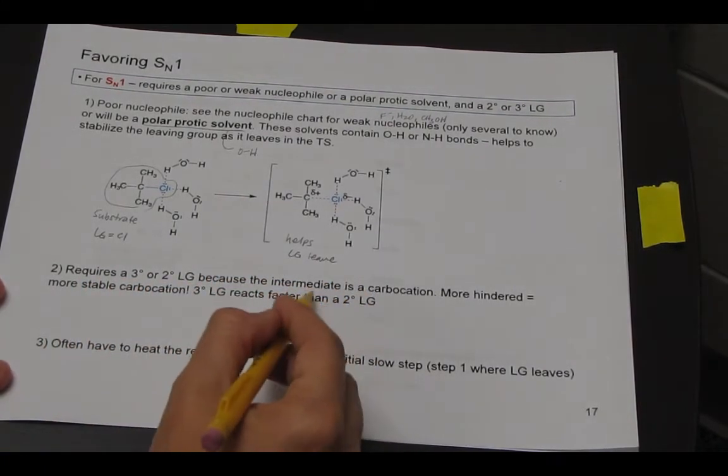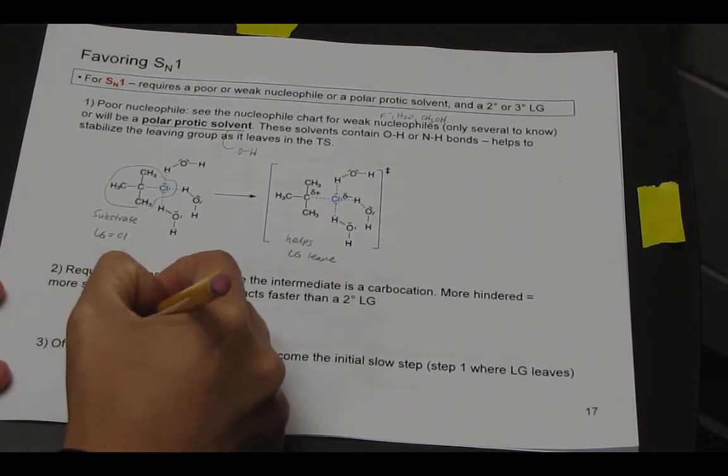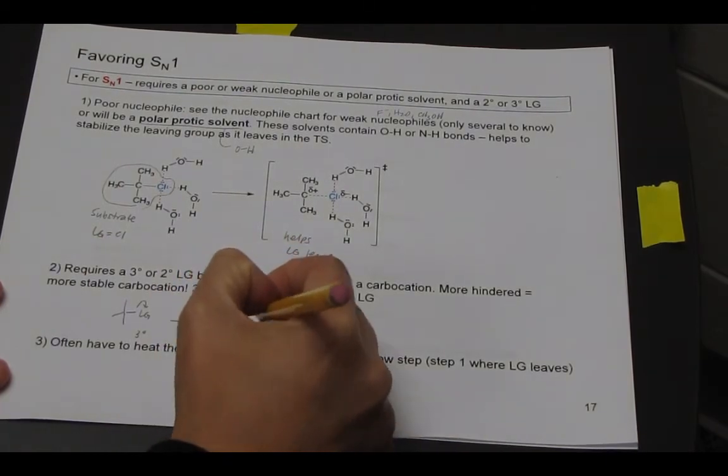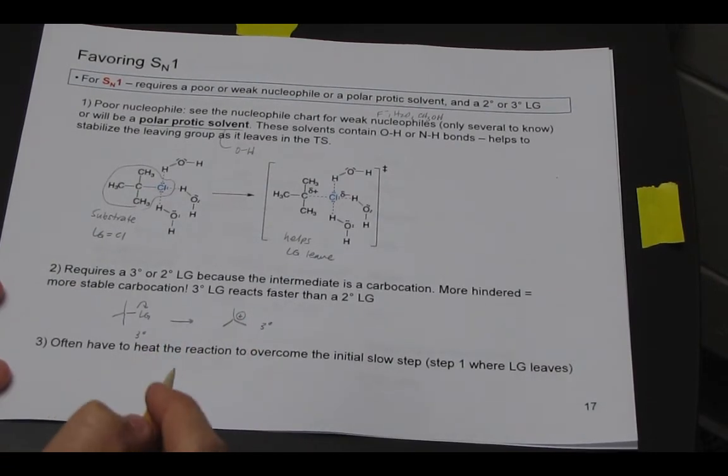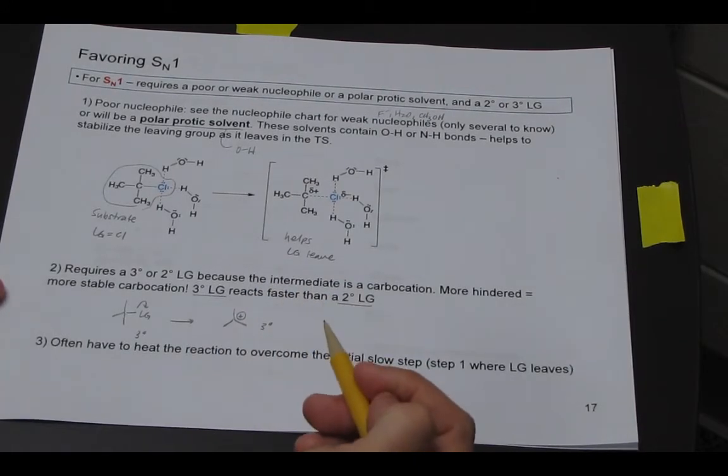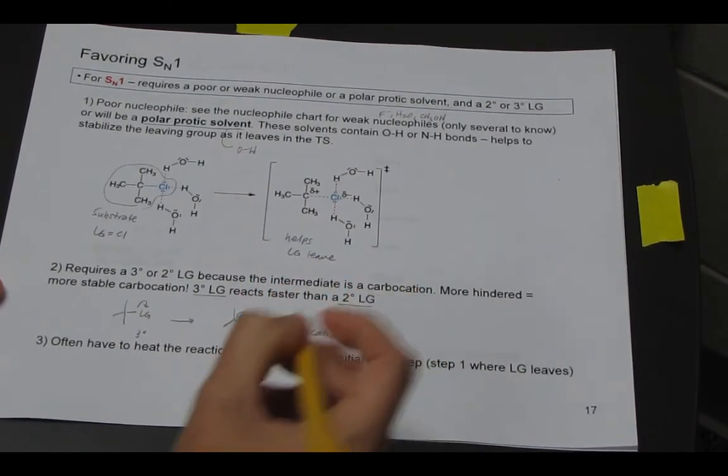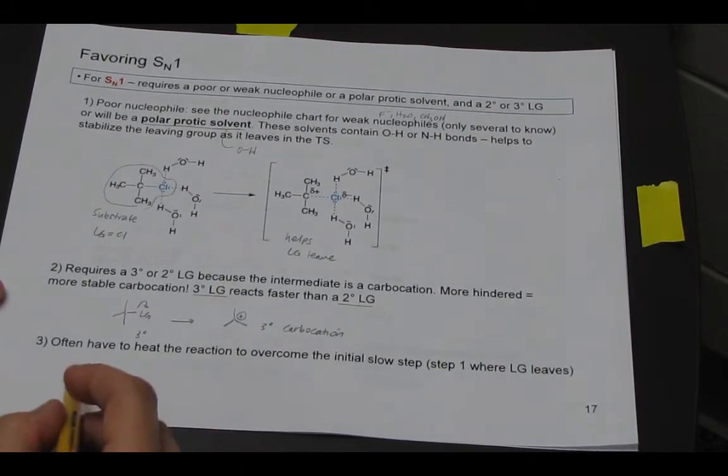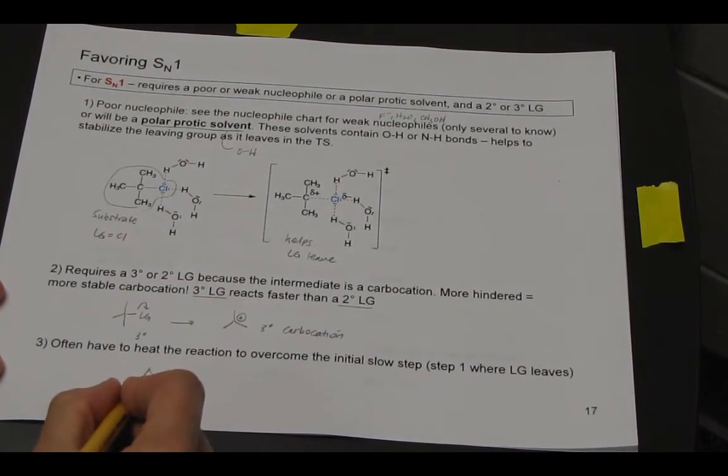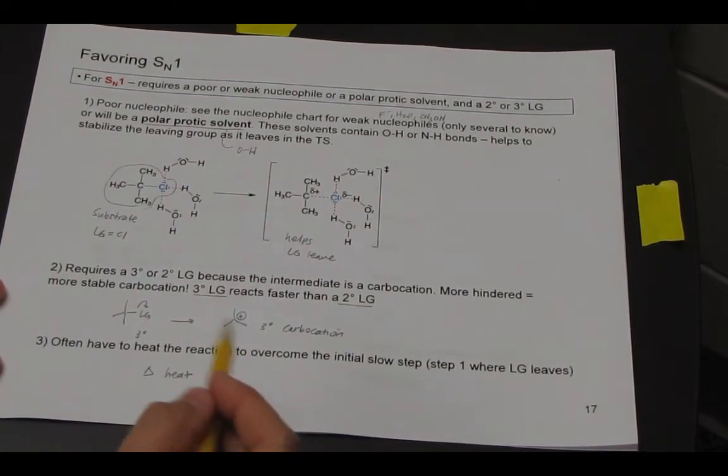We require a tertiary or secondary leaving group. And the reason is, is because our intermediate that forms is a carbocation. So if our leaving group is tertiary and it leaves, it forms a carbocation that's tertiary. And that's favored. In general, tertiary is better than secondary and reacts faster in terms of rate. Because a tertiary carbocation is more stable than secondary. And the other hint that you have SN1 is that you have heat. And heat could be written as a delta symbol on the reaction arrow. And so heat helps you overcome the step of the leaving group leaving.